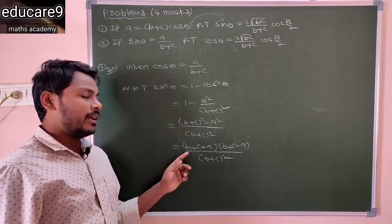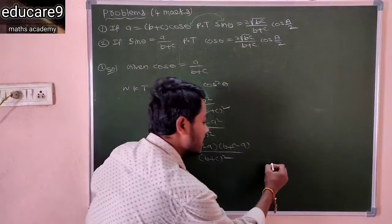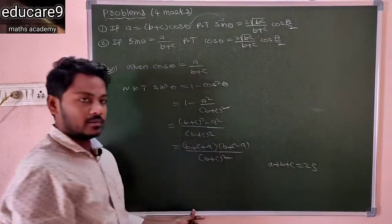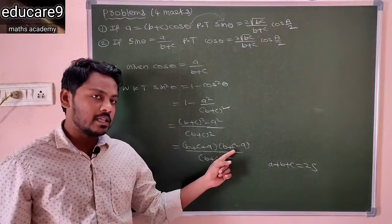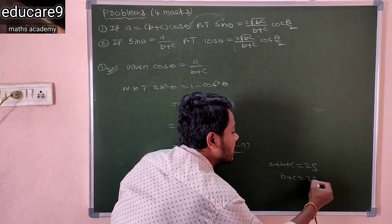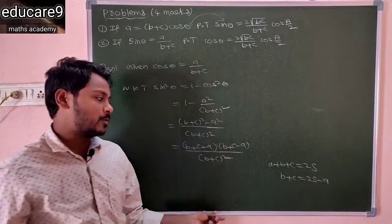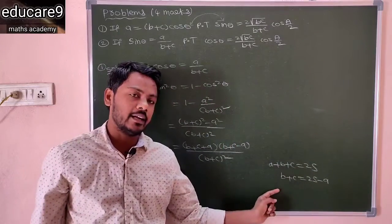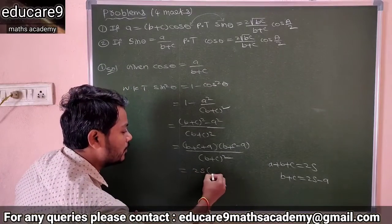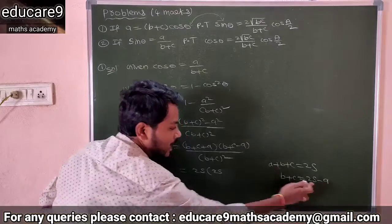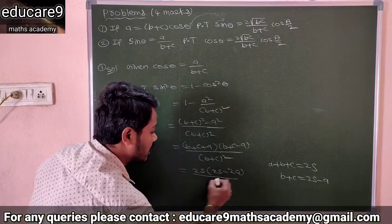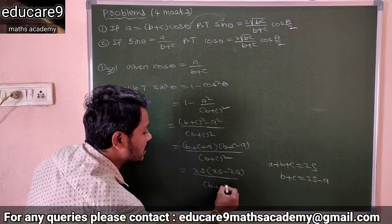So the numerator is in the form of a² minus b². You apply the identity (a+b)(a-b). So this becomes (b+c+a)(b+c-a), divided by (b+c)². You know that the perimeter of the triangle: a+b+c equals 2s, and b+c equals 2s minus a.